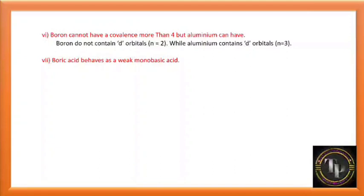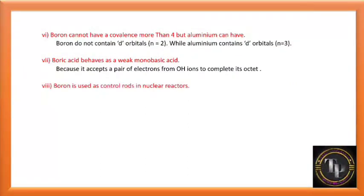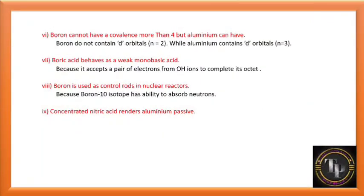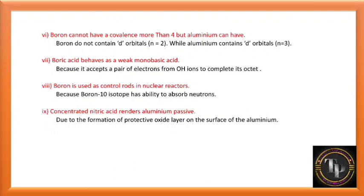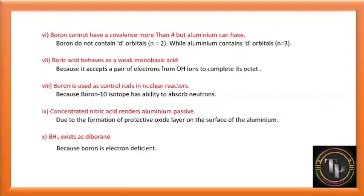Boric acid behaves as a weak monobasic acid because it accepts a pair of electrons from OH⁻ ions to complete its octet. Boron-10 isotope has the ability to absorb neutrons, so boron is used as control rods in nuclear reactors. Concentrated nitric acid renders aluminium passive due to the formation of a protective oxide layer on the surface. BH3 exists as diborane because boron is electron deficient and dimerizes to attain a stable octet.